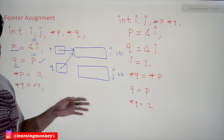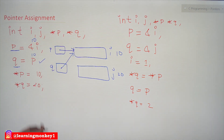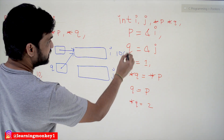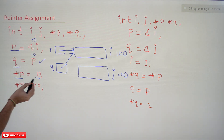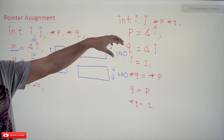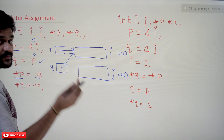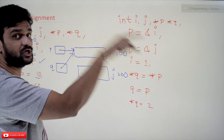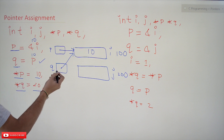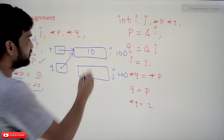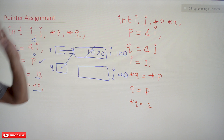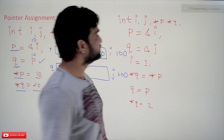Next, *p = 10 — let's use 100 and 200 to avoid confusion. So far we haven't assigned a value to i, but by using pointers we can assign values. The indirection operator *p means the value at the location the pointer is pointing to is set to 10. Then *q = 20 — since q is also pointing to the same memory location, we are updating that value to 20.